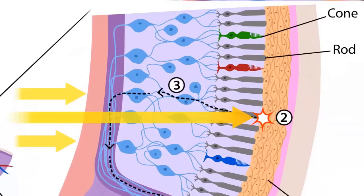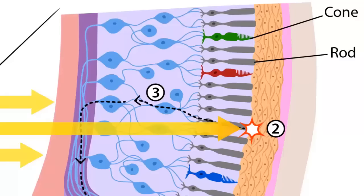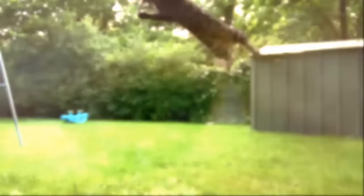Rods are responsible for peripheral and night vision, where they can detect brightness and shades of gray. Meanwhile, cones are responsible for day vision and color perception. To put it simply, if you see a lot of colors you have a lot of cones, and you can see better in the dark if you have a lot of rods. Cats actually have a high concentration of rod receptors and a low concentration of cone receptors, while humans have the opposite, which is why we can't see as well at night but can detect colors better.